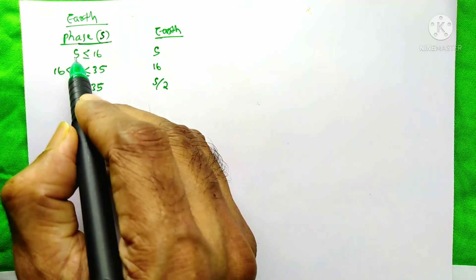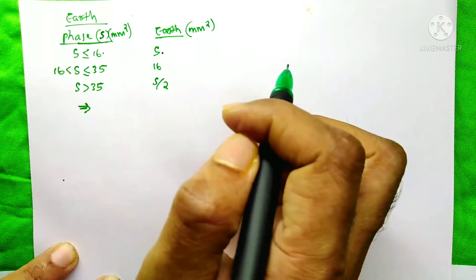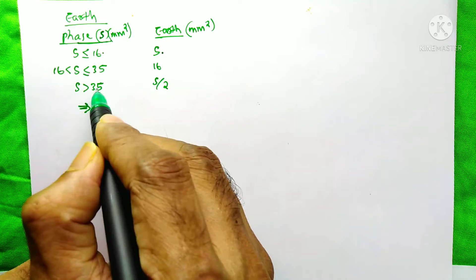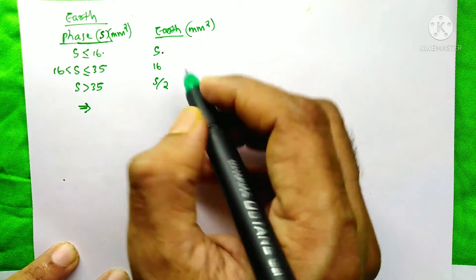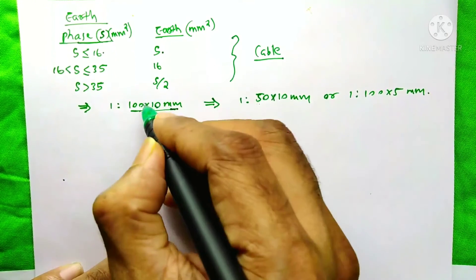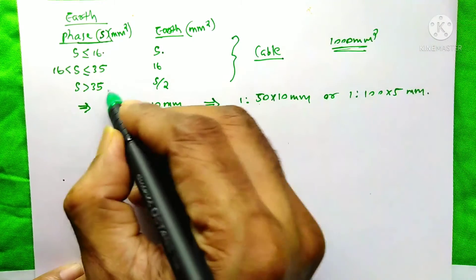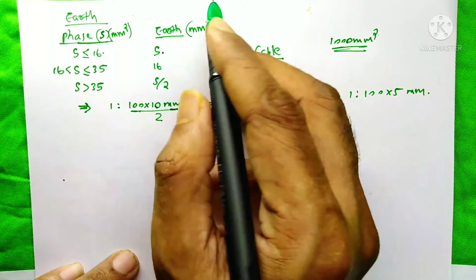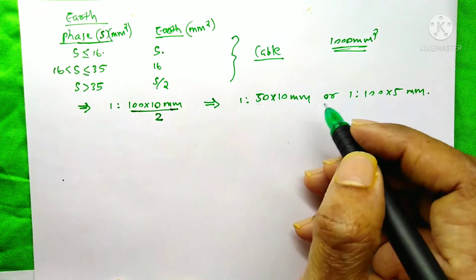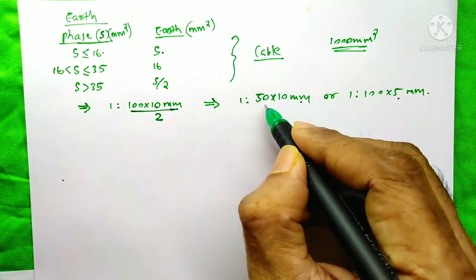Next, sizing the earth bus bar. If the phase bus bar area ≤16 mm², earth = same as phase. If >16 mm² and ≤35 mm², earth = 16 mm². If >35 mm², earth = half of phase. Our phase conductor is 100×10 = 1000 mm², which is greater than 35 mm², so earth = half: 100×10 / 2, giving options of 50×10 mm or 100×5 mm. I prefer 50×10 mm.